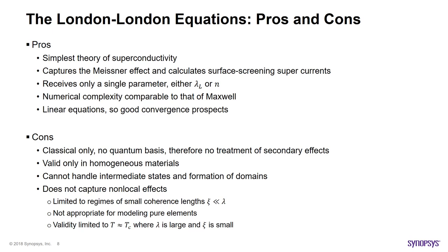Having gone over a brief description of London equations, let's take a look at their pros and cons from the TCAD perspective. Arguably, the main attraction of the London theory and its simplicity. It captures one of the hallmarks of superconductivity, the Meissner effect, and it only receives a single parameter, the London penetration depth, which again speaks to its overall simplicity. In terms of numerical complexity, it is at the same level as the Maxwell equations, which is not bad at all. In addition, all the equations are linear, so they have good convergence prospects.